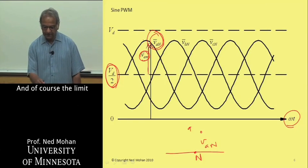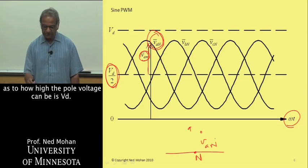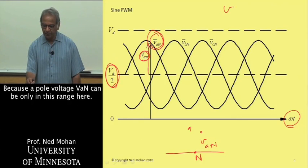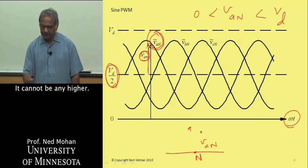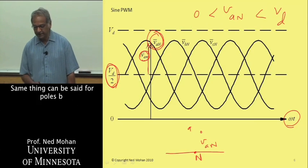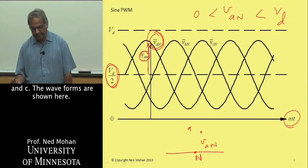Of course, the limit to how high the pole voltage can be is VD, because a pole voltage VAN can be only in this range here, cannot be any higher. The same thing can be said about poles B and C.